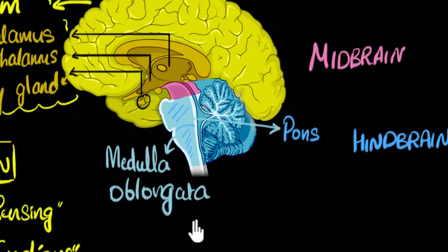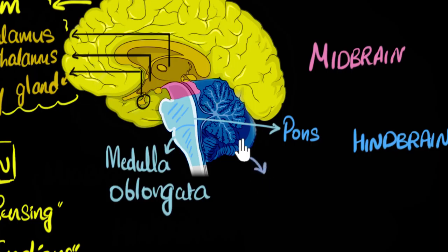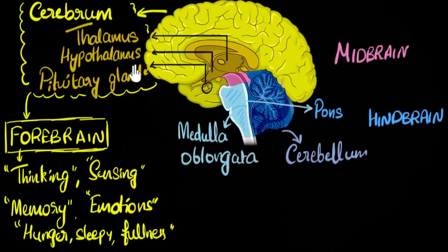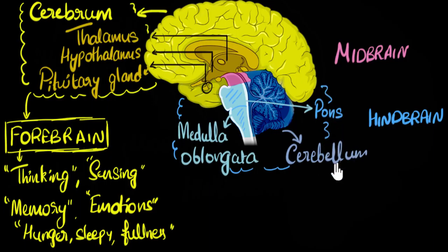We're going to look at the functions of the medulla oblongata separately. And then there's this big region that looks like a brain on its own — it's called the cerebellum. Do not confuse that with the cerebrum — the cerebrum is the biggest part of our brain. So these three regions — pons, medulla oblongata, and cerebellum — are the parts of our hindbrain.